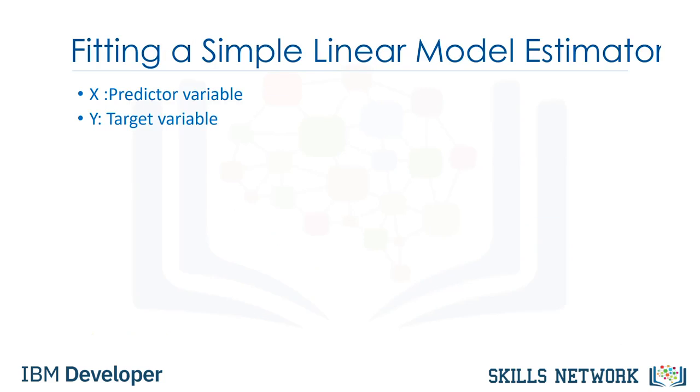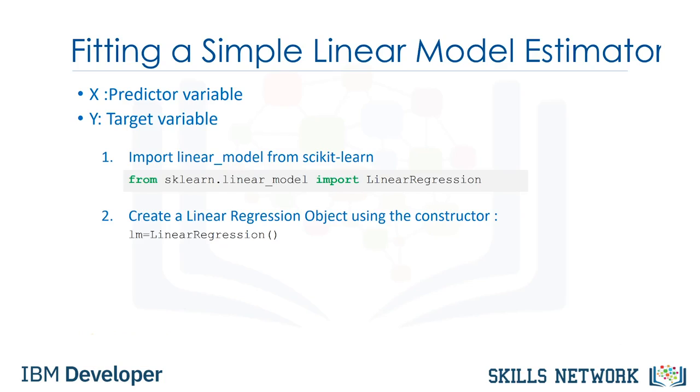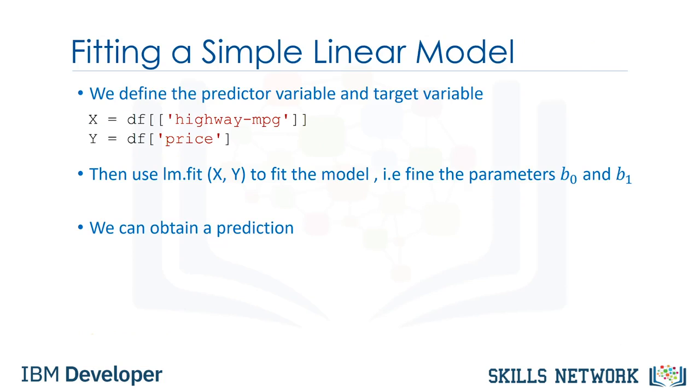To fit the model in Python, first we import linear model from scikit-learn, then create a linear regression object using the constructor. We define the predictor variable and target variable. Then use the method fit to fit the model and find the parameters b0 and b1. The input are the features and the targets. We can obtain a prediction using the method predict.